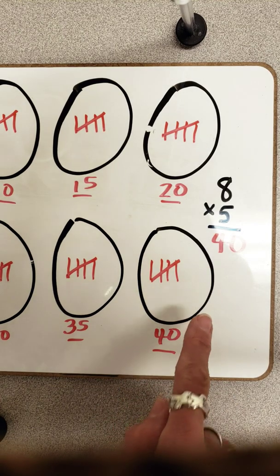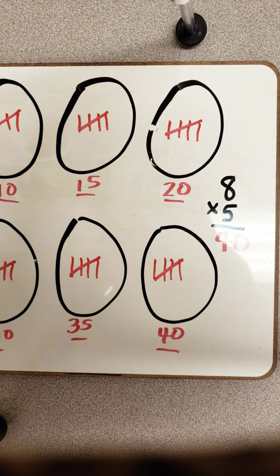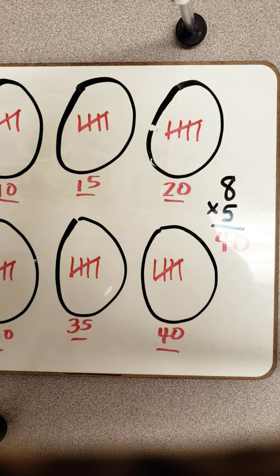So my answer still remains the same. Sometimes we're going to have objects that we can put inside to group them, and other times we're going to be able to use just little tally marks as well. Notice that the groups are always equal — when we're doing multiplication and using grouping, they've always got to have equal groups.